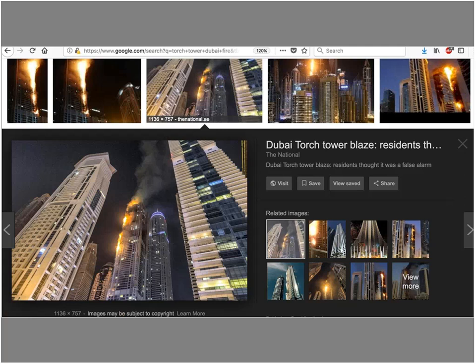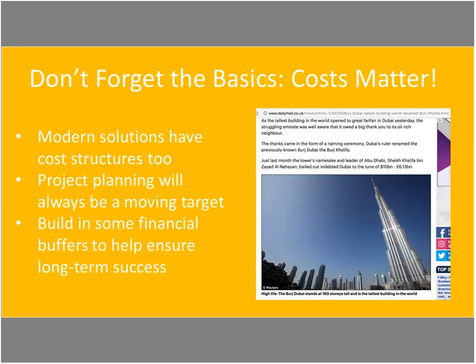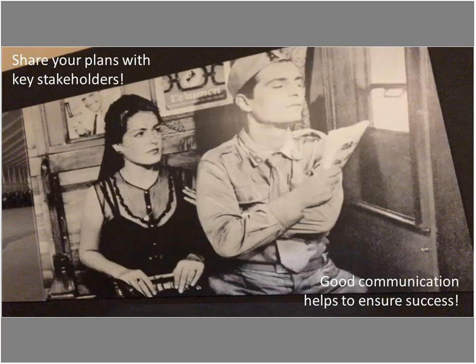There are new exciting problems that will arise. The Dubai Torch caught on fire — the material used on the outside of the building was just not engineered very wisely. There are lots of things to worry about in this new age of information design — these skyscrapers of data management systems. Modern solutions have cost structures too. The builders of the Khalifa Tower ran out of money two-thirds of the way through and had to borrow money from their neighbor, which is why they changed the name. The old rules matter — financing, planning with buffers. You have to think through all that stuff, get your early stage success stories, and then communicate your plans with all stakeholders.